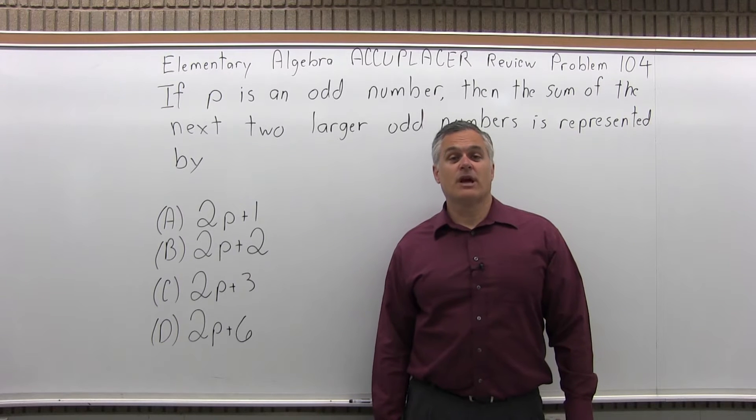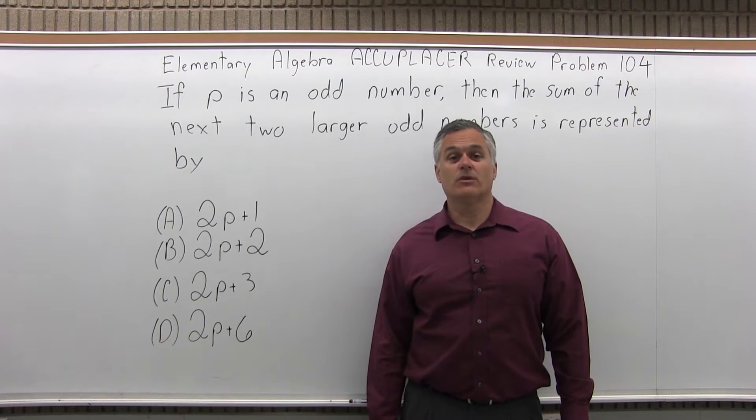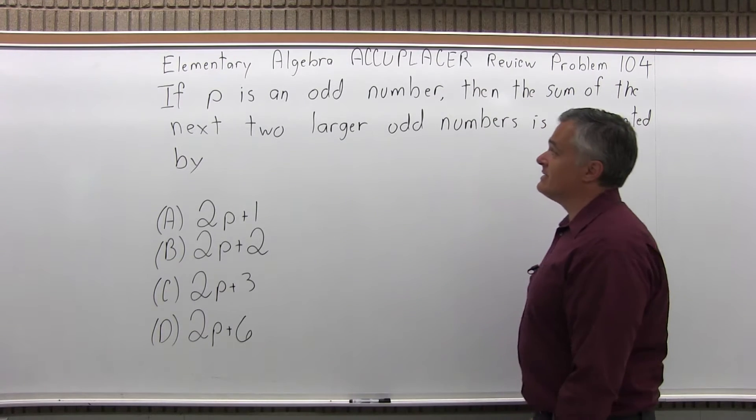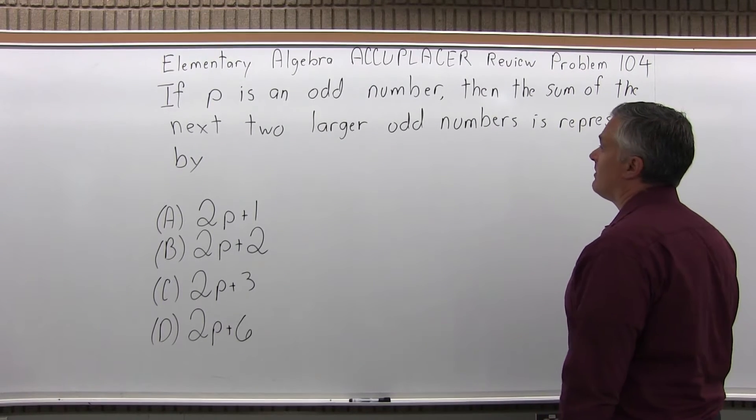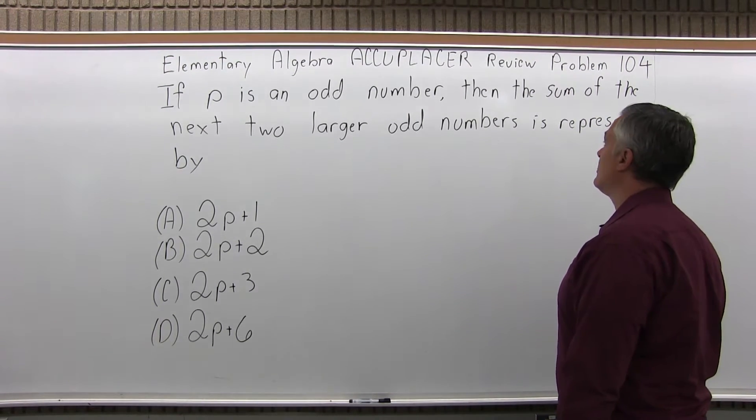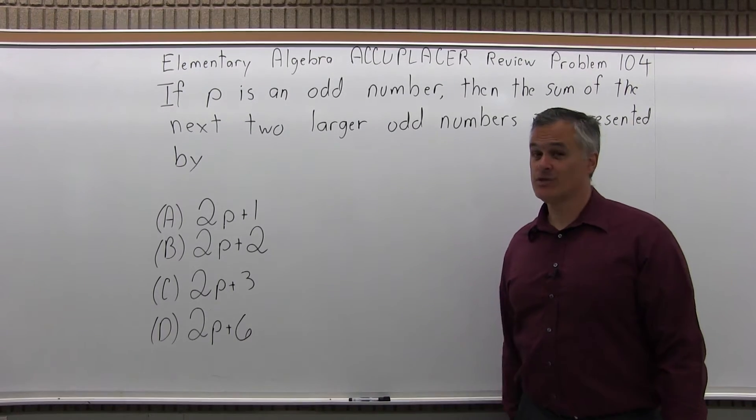This is the Elementary Algebra Accuplacer Review, Problem 104. It says, if P is an odd number, then the sum of the next two larger odd numbers is represented by, and then we have four choices.